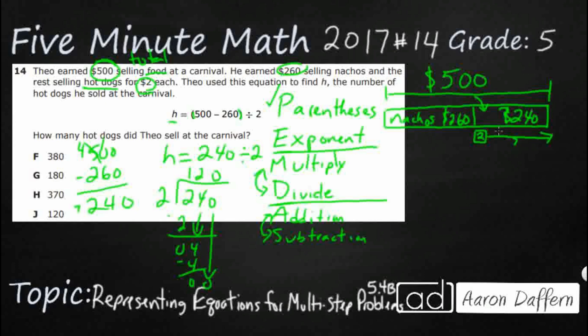Now, let me show you how important these parentheses are. Because if we didn't do the parentheses, h equals 500 minus 260 divided by 2. Let's say we took the parentheses off. Well, order of operations, we've got a subtraction and a division. We would actually have to do this division first.